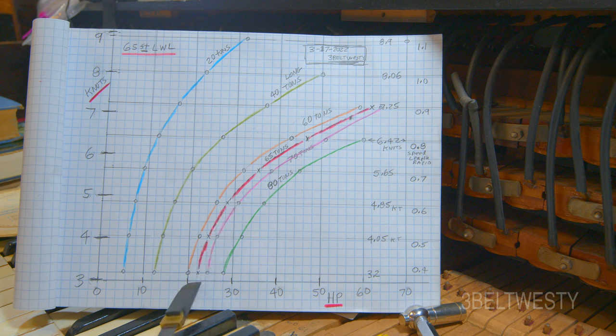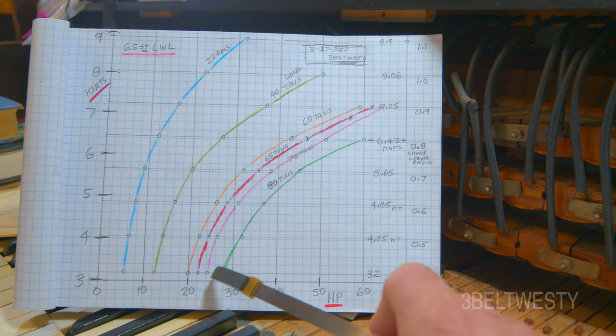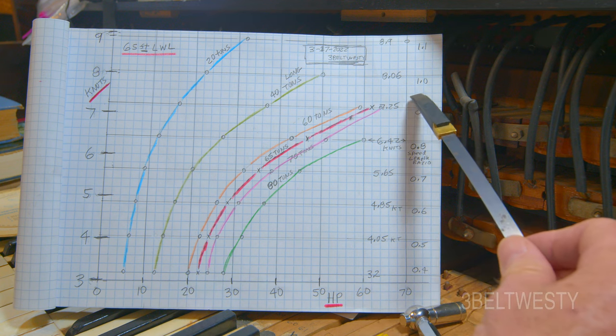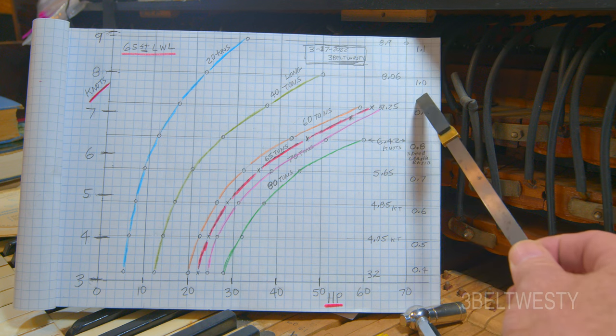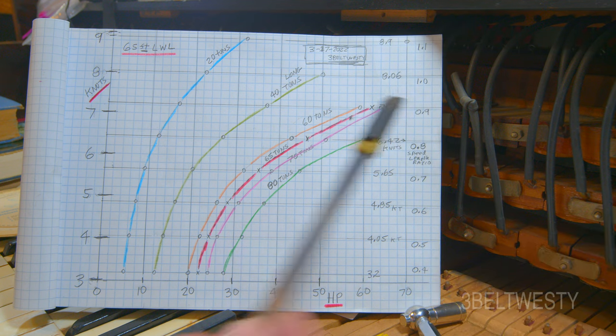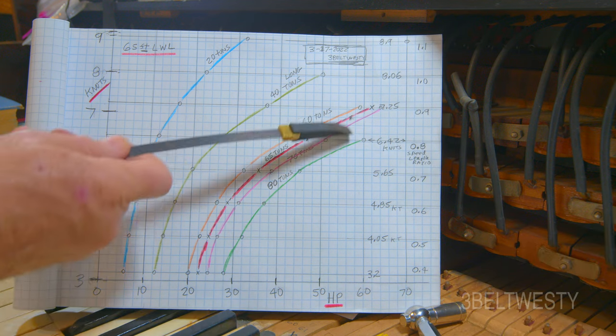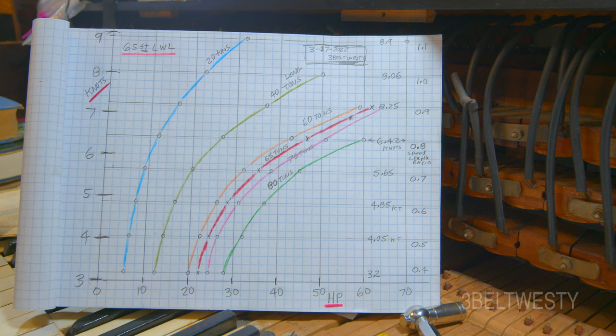If you just putter around at 22 horsepower, you're only at like 3.4 knots. The faster and faster you go, the more horsepower you add. You go faster, but you pay a big penalty as you approach the hull speed here.